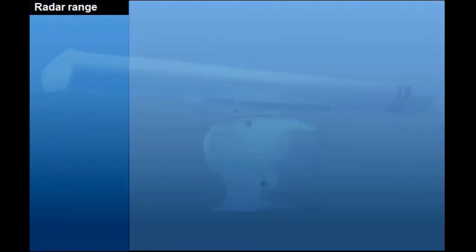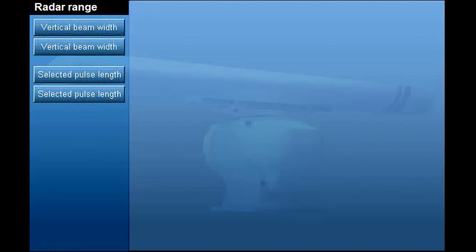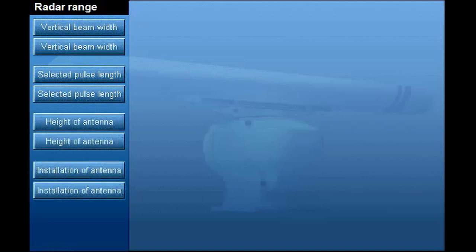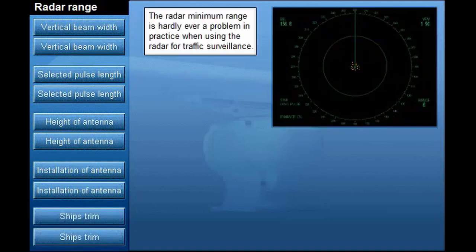The radar minimum range depends mainly on the following parameters: antenna vertical beam width, selected pulse length, height of antenna, installation of antenna, ship's trim. The radar minimum range is hardly ever a problem in practice when using the radar for traffic surveillance.